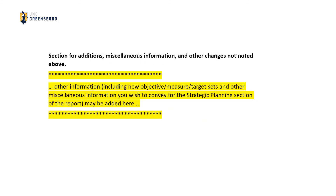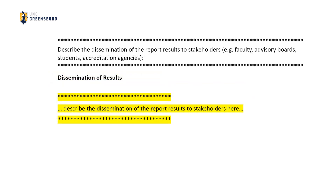Next, you'll find a section for additions, miscellaneous information, and other changes for the strategic objectives section. In this optional section, the user is provided with an editable area where other information regarding strategic objectives may be provided. For example, did the program have a strategic objective, measure, and target set that wasn't included in the template? Here's the spot to list that set and its associated findings. Other miscellaneous information related to the strategic objectives section can be provided here as well.